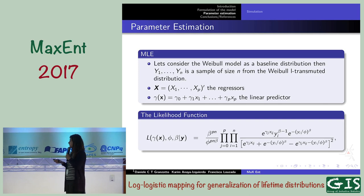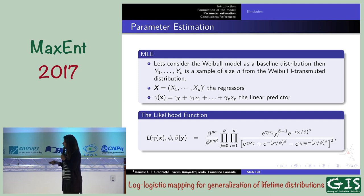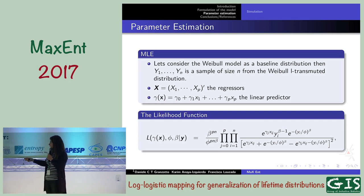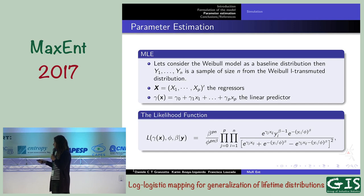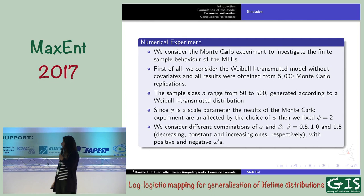For parameter estimation, we are using MLEs. Let's consider the Weibull distribution as the baseline. Let Y₁ to Yₙ be a sample from the Weibull L-transmuted distribution. As an example, we include some covariates: the X vector contains the regressors and gamma·X is the linear predictor. The likelihood is defined accordingly. The parameter beta is responsible for the shape of the distribution — it is the shape parameter — and phi is the scale parameter.